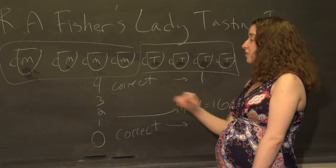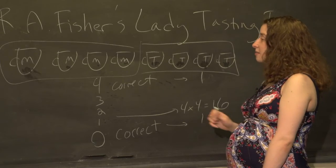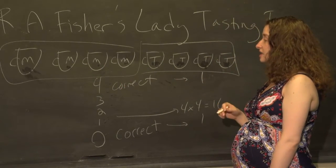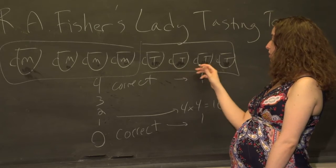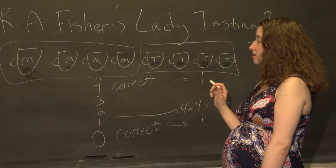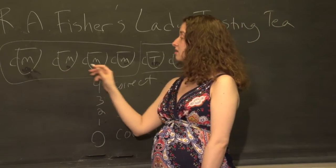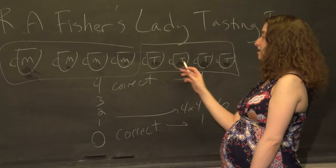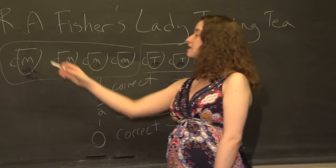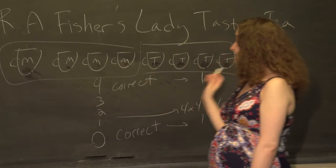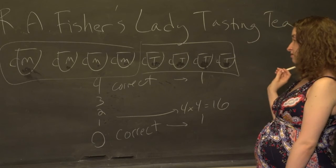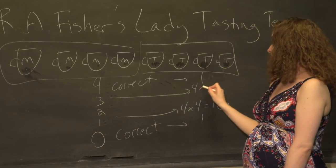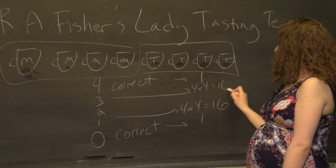Similarly, if she is going to get three correct, that means we're going to draw three milk cups and one tea cup. She's going to omit only one of these four milk cups and include only one of these four tea cups. So there are four possible cups of milk she could omit and four possible cups of tea she could include — again four times four is 16.